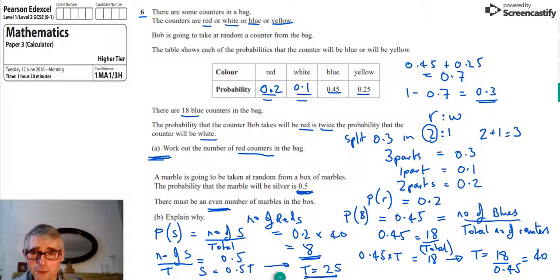Now, that proves that it must be an even number, because whatever number of silvers we have, if we multiply it by 2, we will get an even number. So we say T must be even. And that's it, we've done it. I hope that's been of help to you. If it has, please like.